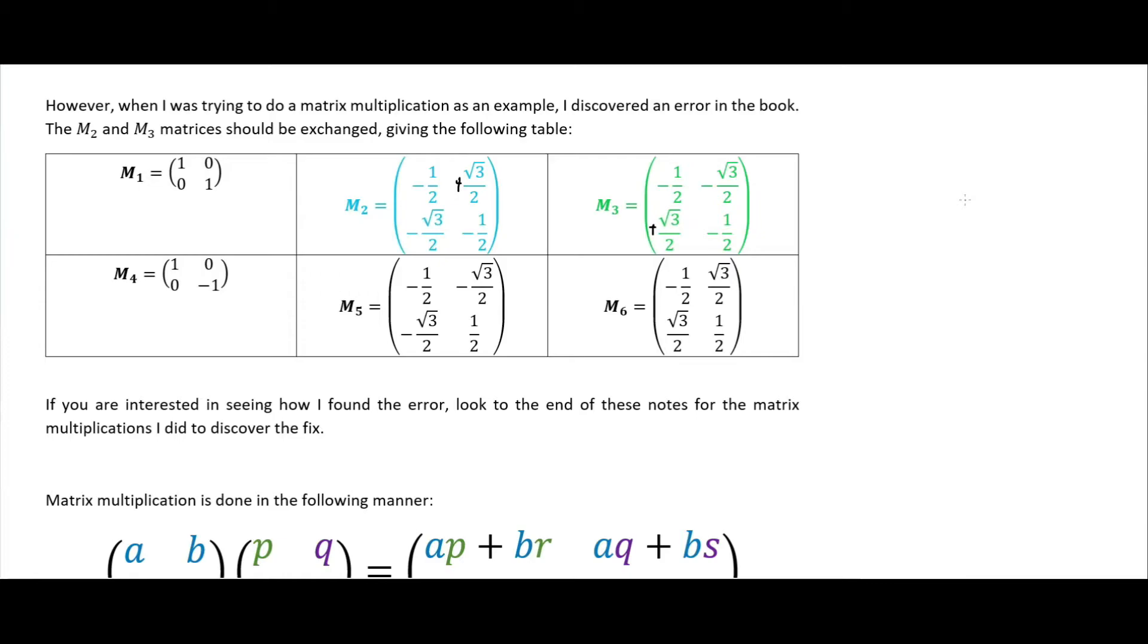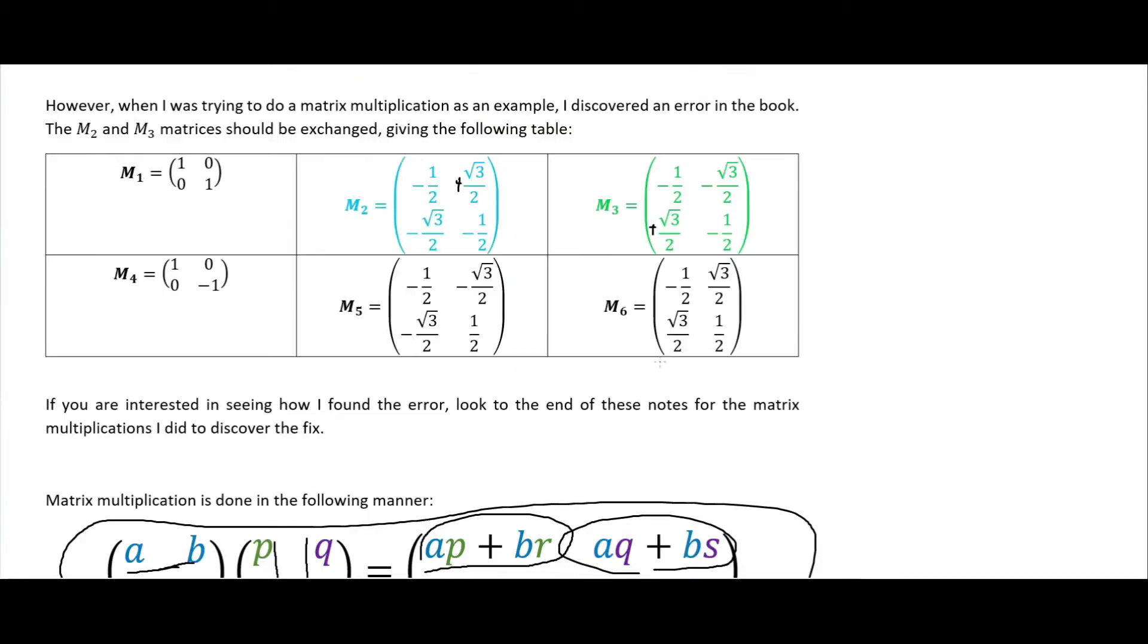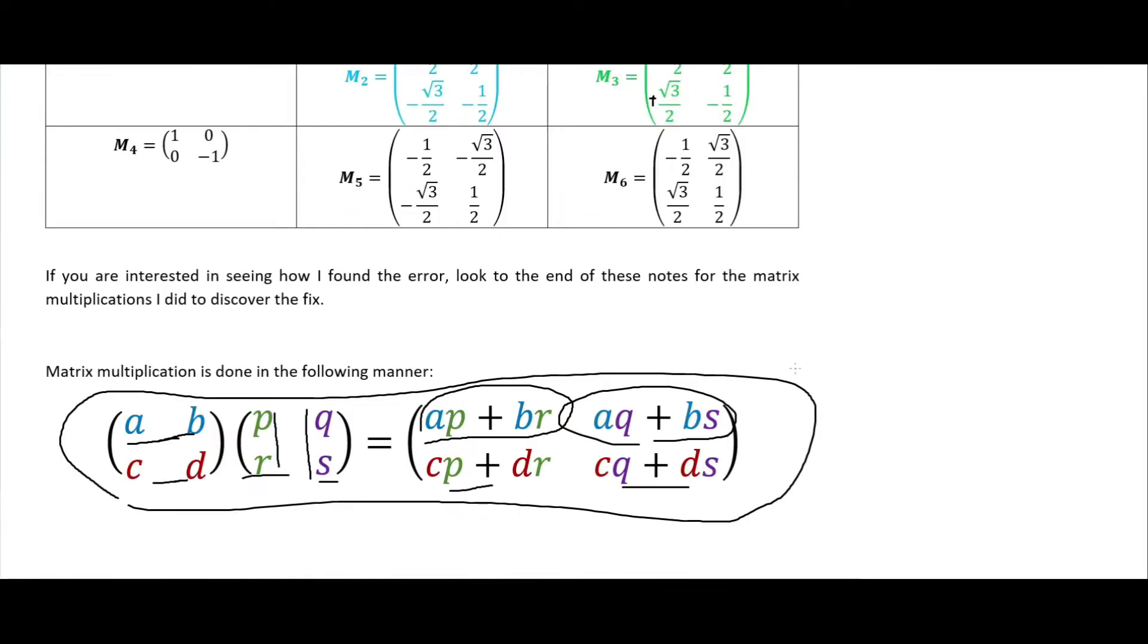The binary operation is matrix multiplication, which is done using this right here. You take the top ones and multiply by these side ones to get the upper left corner. Then the top with the right to get the upper right, the bottom with the left for the bottom left, and bottom with right for the bottom right. That is matrix multiplication, our binary operation that makes these particular matrices isomorphic and therefore a representation of our C3V group.